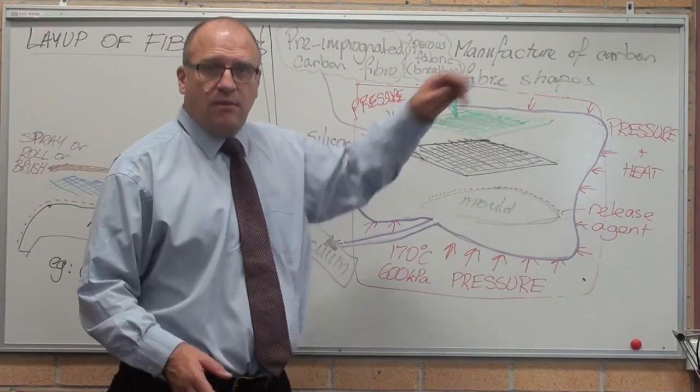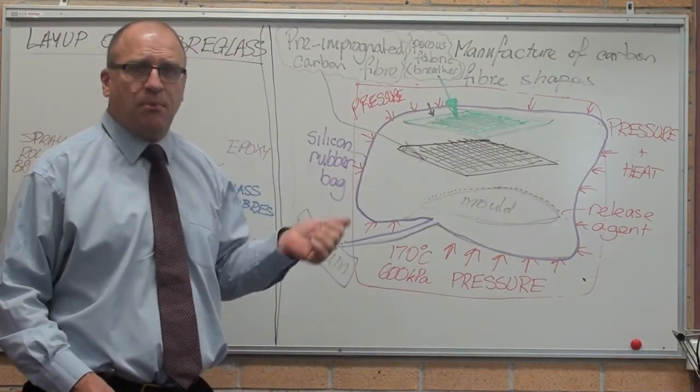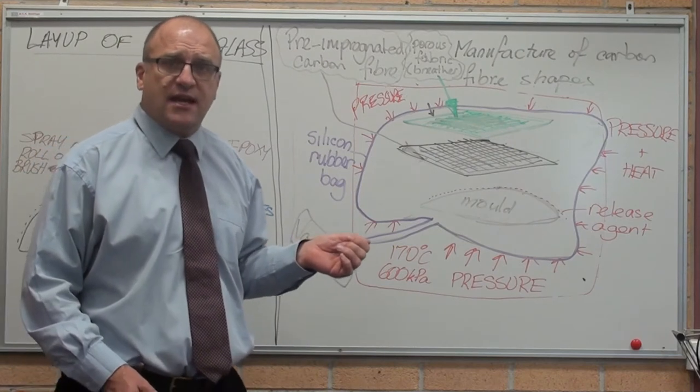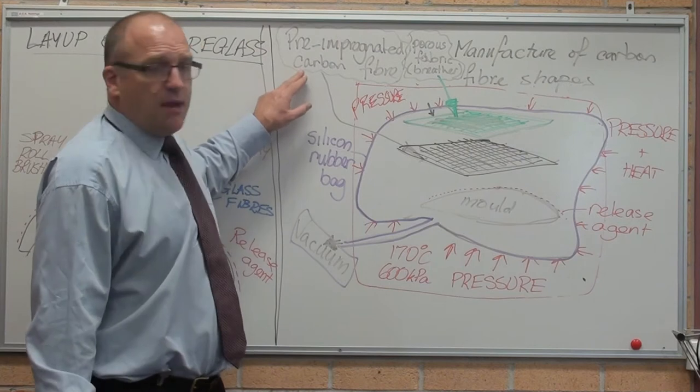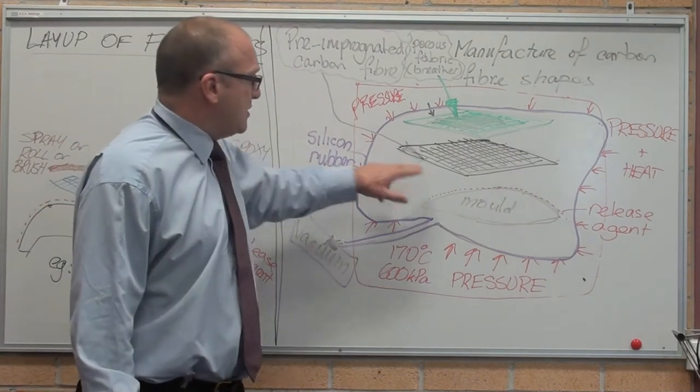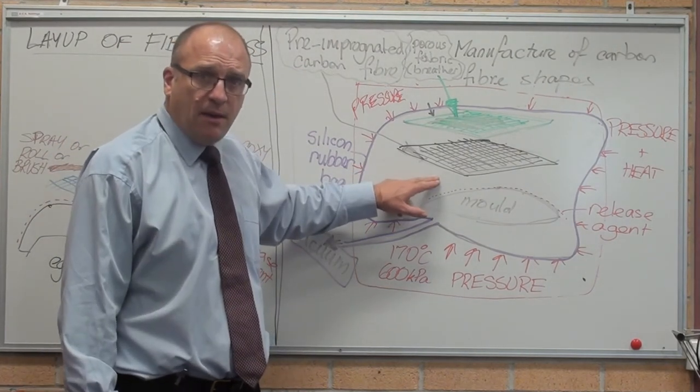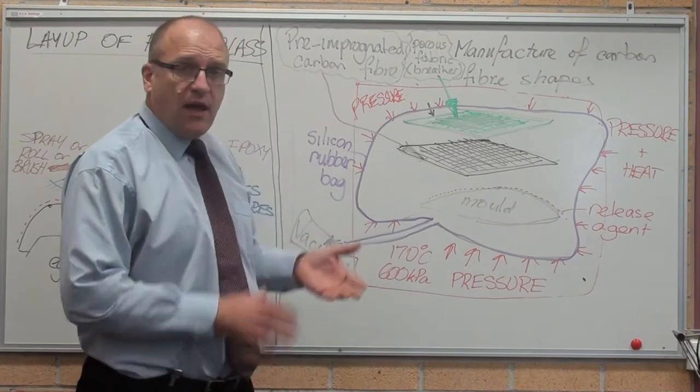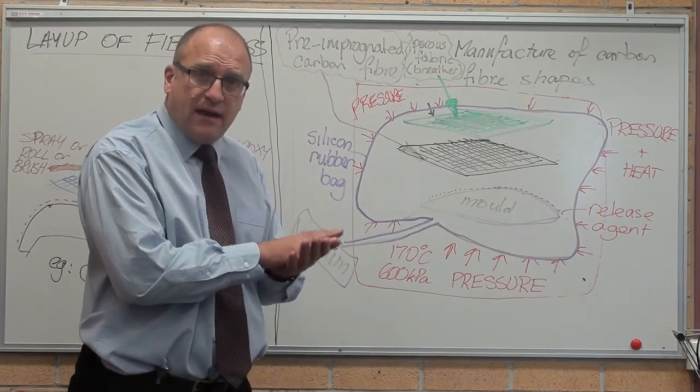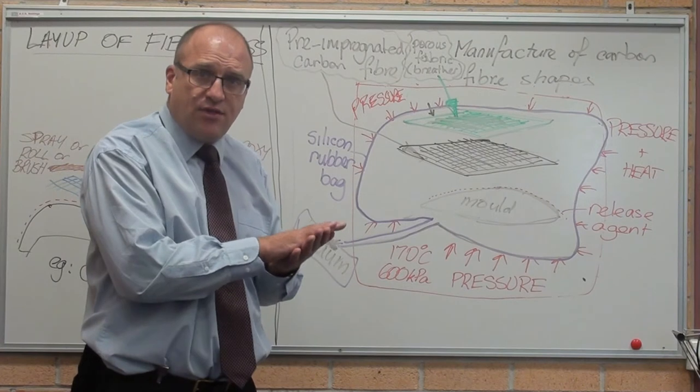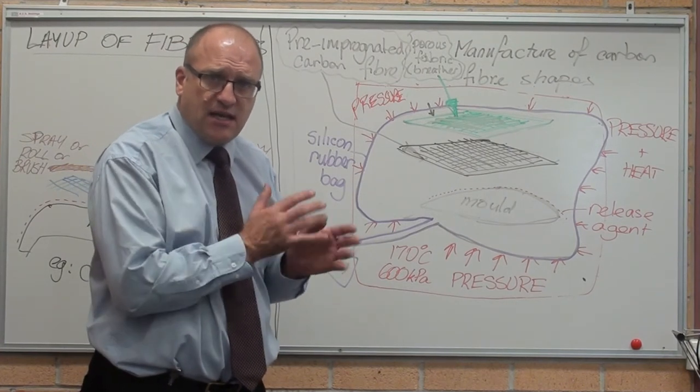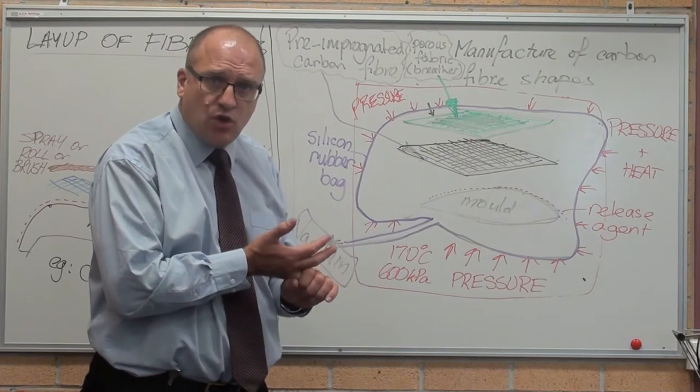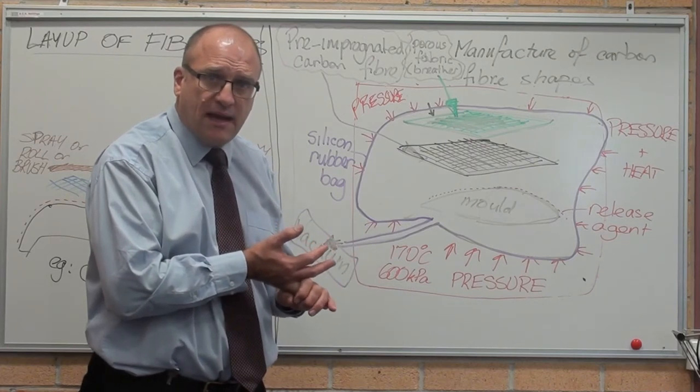Carbon fibre shapes are made using a similar process, epoxy in a mould, but the difference is they use an autoclave. So they've got pre-impregnated carbon fibre. Here's a woven mat of carbon fibre with epoxy already coating everything that's not cured. So it just needs heat and pressure to activate the curing agent to make it solidify.